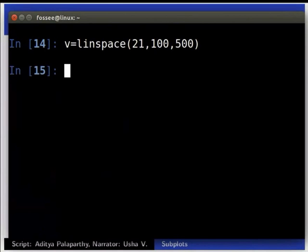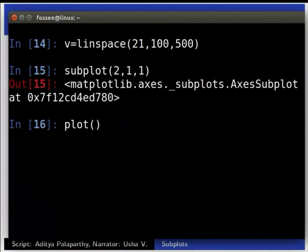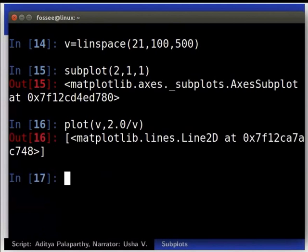We can create first subplot and draw pressure vs. volume graph using this V. subplot 2 comma 1 comma 1. Plot V comma 2.0 by V.